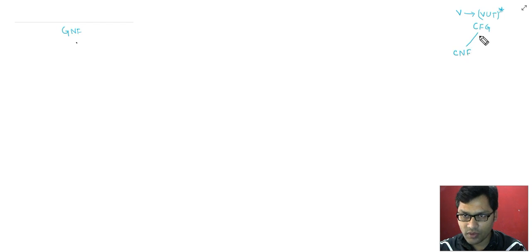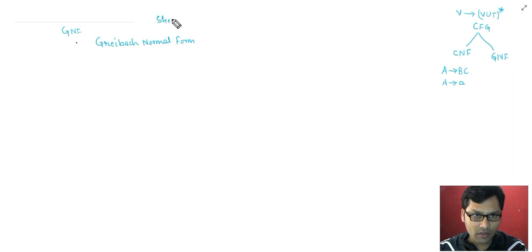The first type was Chomsky Normal Form and another type was GNF. In Chomsky Normal Form, we have seen the format A derives BC and A derives A. It means right-hand side with two variables or one terminal in CNF. But in GNF, this Greibach word comes from the person who established this type of form. Name was Sheila Greibach. She proposed this type of form of CFG. That's why the name suggests GNF.